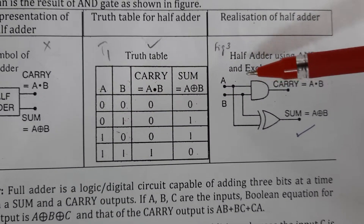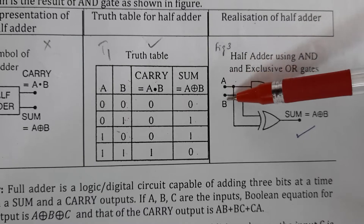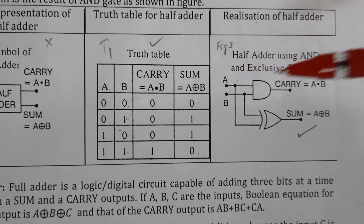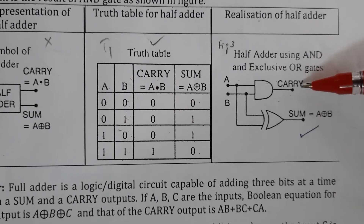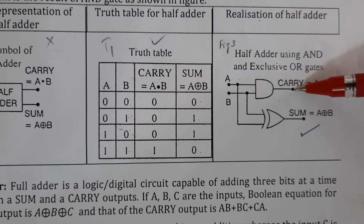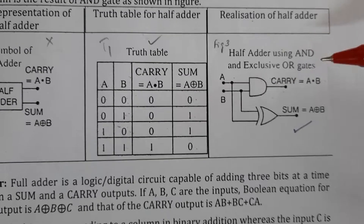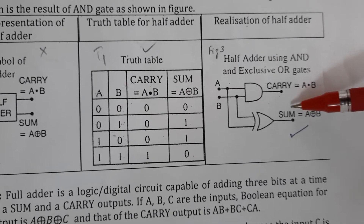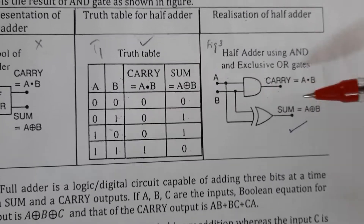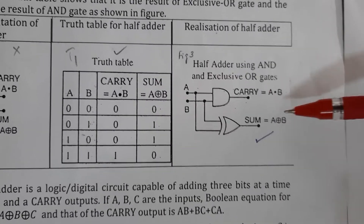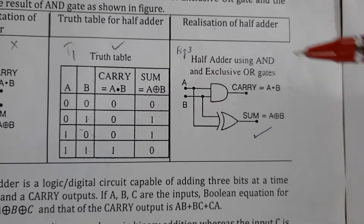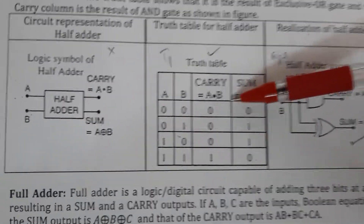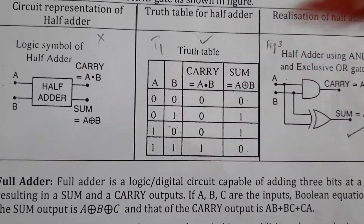Half adder consists of 2 inputs represented by A and B, and 2 outputs. One output is represented as carry, which is A·B, and the other is represented as sum, which is A⊕B. The truth table for half adder is represented in this tabular column.